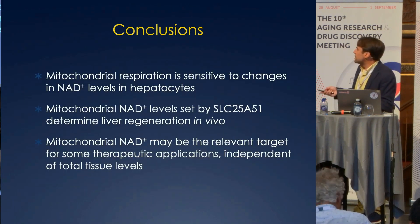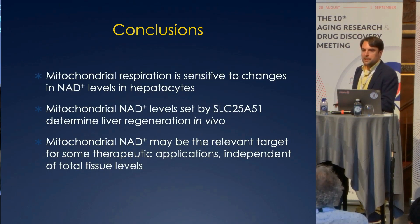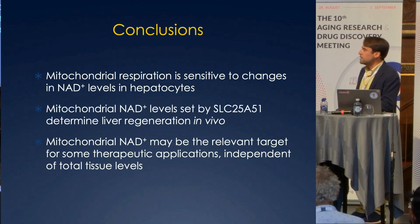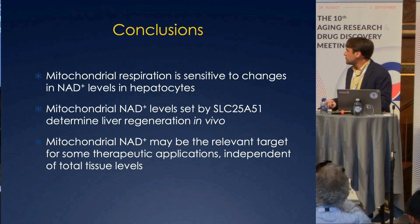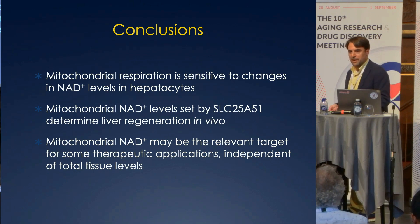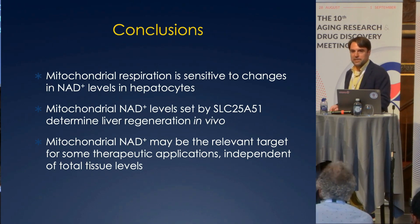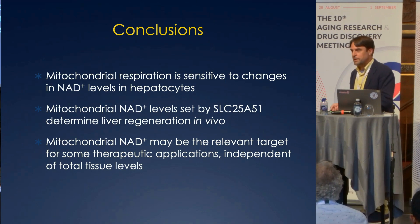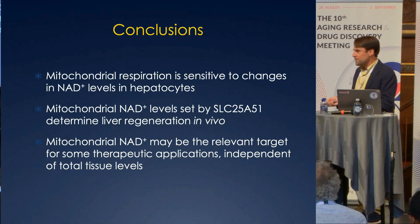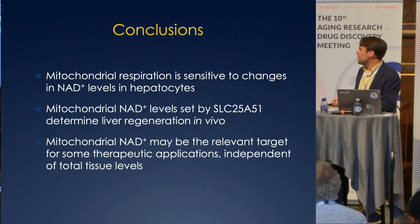In conclusion, I hope I've convinced you that mitochondrial respiration is sensitive to NAD levels in hepatocytes in both directions. Mitochondrial NAD levels set by the gene expression of SLC25A51 seem to be sufficient to determine liver regeneration in vivo, and we think mitochondrial NAD may be the relevant therapeutic target in many other applications which we're interested in testing. But we really want to see how general this paradigm turns out to be. If this is the case, mitochondrial NAD is a small fraction of tissue NAD, and the surrogates we're using to evaluate supplementation may not be the right ones if it's really the mitochondrial NAD that we need to know.